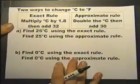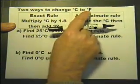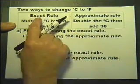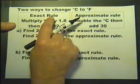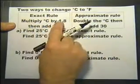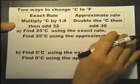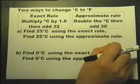Here we've got two ways to change degrees Celsius to degrees Fahrenheit. There's an exact rule and an approximate rule. The exact rule you'd probably use a calculator for, whereas the approximate rule we could do in our heads. That's the idea of an approximate rule.